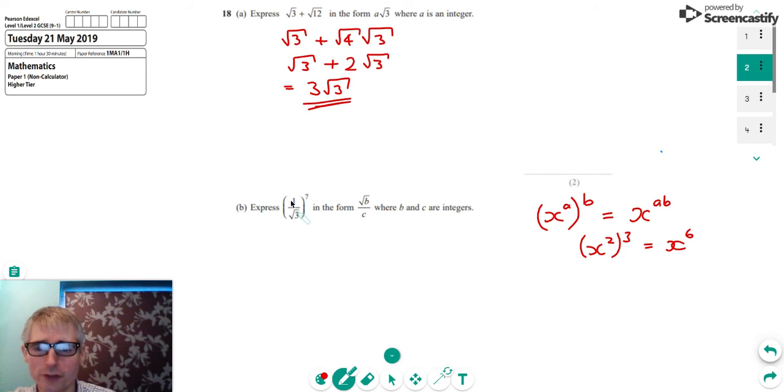Also, we will need to write the root 3 as an index form or indices. So to do that, we would say that a root is actually 1 over 2. That's another way of writing the square root 3 is 3 to the power half. So we've got 1 over 3 to the power half, all to the power 7.